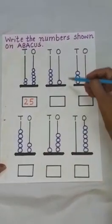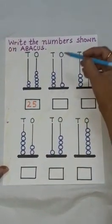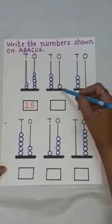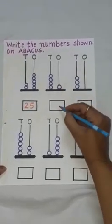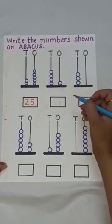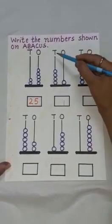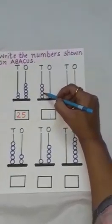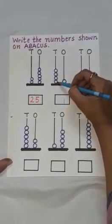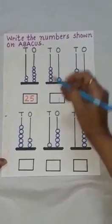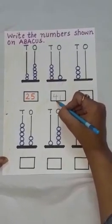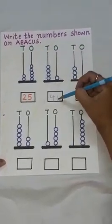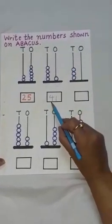Now, move to the next abacus. Count the number of beads at the ones place. Here, it is only 1. So, we are going to write 1. Now, count the number of beads at the tens place: 1, 2, 3, 4. How many beads are there? Yes, there are 4 beads. So, we will write here 4. And how are we going to write this? 4 tens, 1 ones. Number is 41.